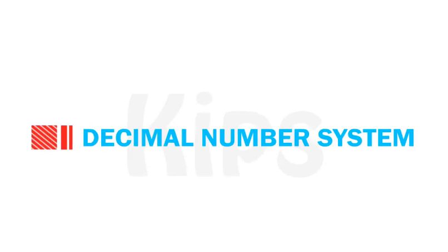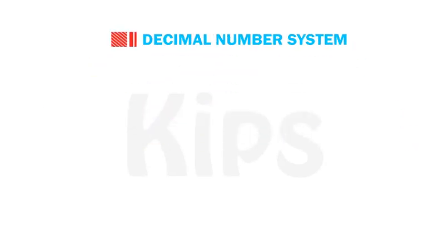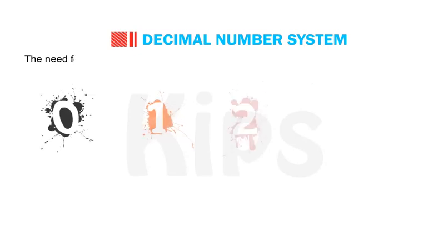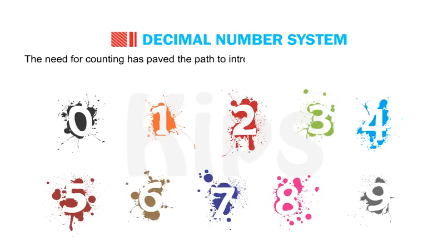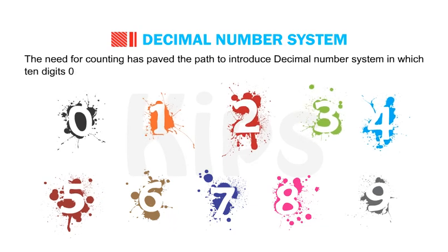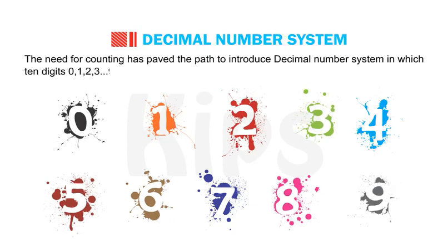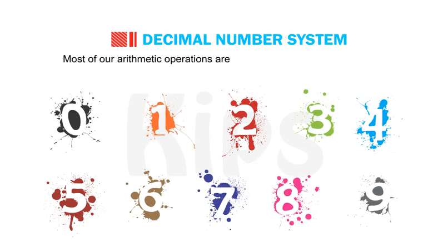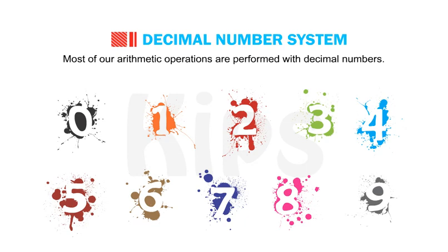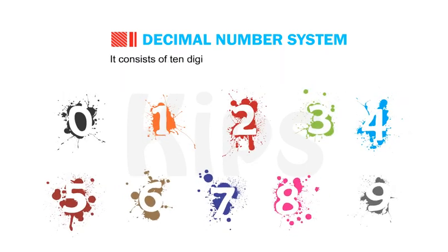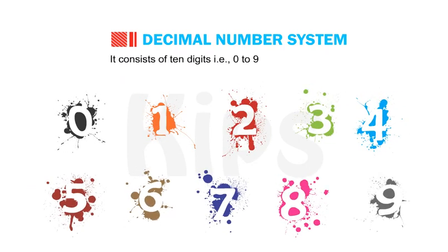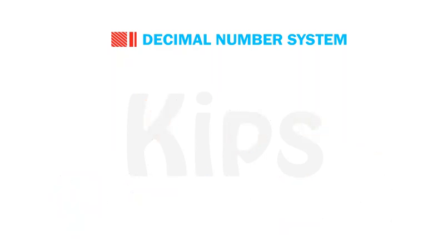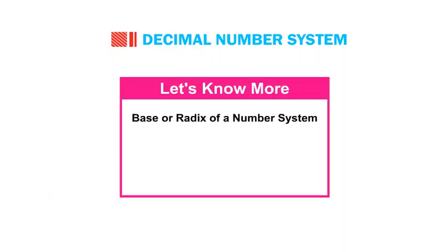First, let us start with the decimal number system. The need for counting has paved the path to introduce the decimal number system, in which 10 digits — 0, 1, 2, through 9 — are used to form any number. Most of our arithmetic operations are performed with decimal numbers. It consists of 10 digits, that is 0 to 9, with the base 10.